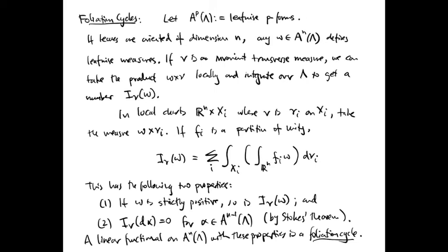Properties of integration have the following two important consequences. If omega is a strictly positive N-form, then so is the number I_nu of omega. Furthermore, by applying Stokes' theorem leafwise, the value of I_nu on an exact form d-alpha must equal zero. Any linear functional on the leafwise N-forms with these two properties is called a foliation cycle.